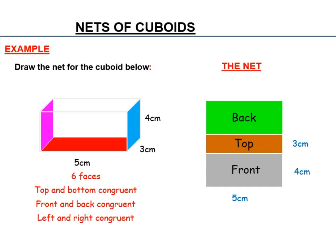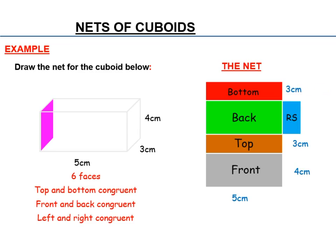And again, because it's congruent, it's the same as the front. And then if we take the bottom off, we attach that to the back, and it's three centimetres. Not quite in order there. So can you see what we've done?